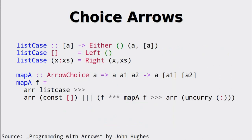Let's take a look at an example. With these additions to our arrows, we can implement the map function. listCase transforms the condition into a function returning an Either. In our mapping, we first apply this function and then use the combinator in order to either return an empty list in the case that the list is empty, and otherwise apply the function f to the head and do the recursive call on the tail. After that we transform the tuples, which are now nested recursively, into a list by using the list constructor.